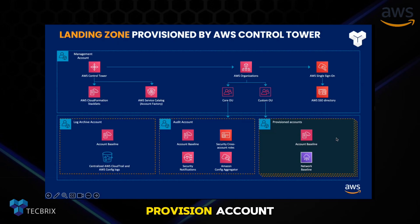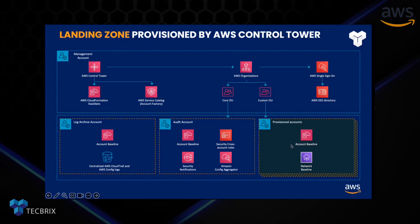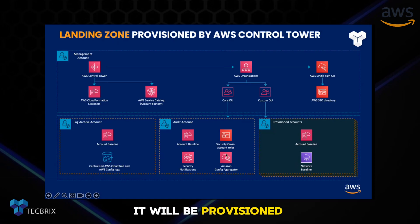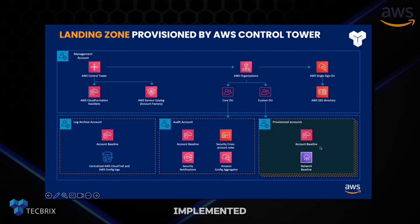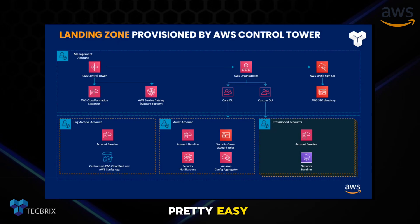You can see a provisioned account here. You can provision as many accounts as you want — maybe 100 accounts. All these accounts will be provisioned through the AWS Account Factory. Once you provision the account to this landing zone, it will have all the account baselines, security baselines, and network baselines implemented within your new AWS accounts. So once you adopt the cloud, it will be pretty easy for you to scale as per best practices.